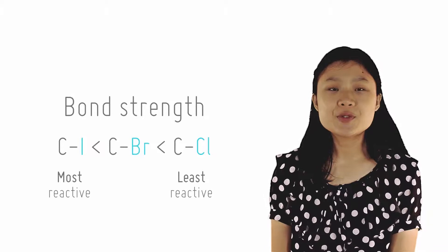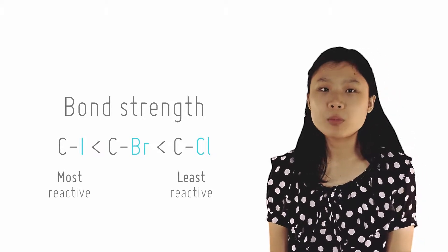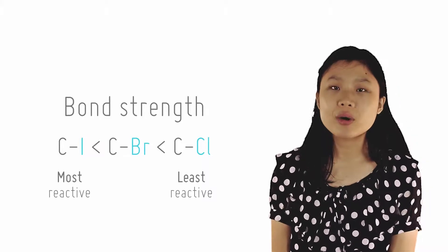Since we already know the relative bond strength of different halogens, we can predict that iodoalkanes react faster than bromo, chloro, and fluoroalkanes in that order.